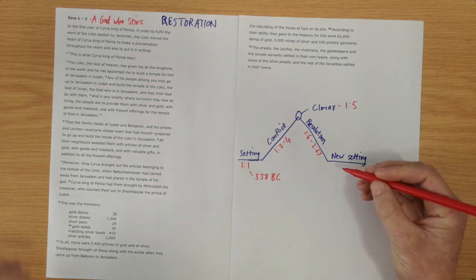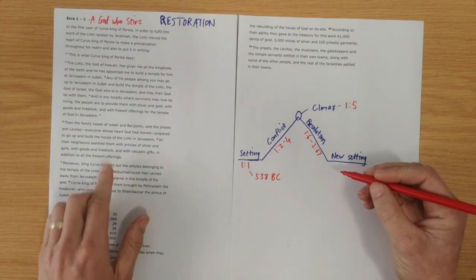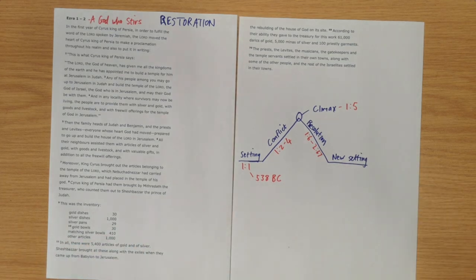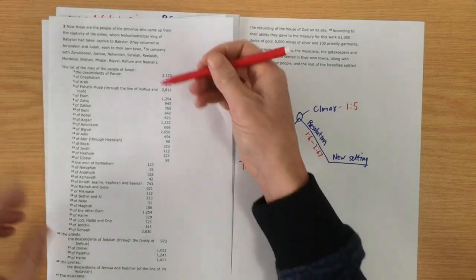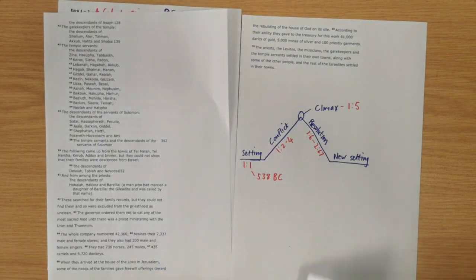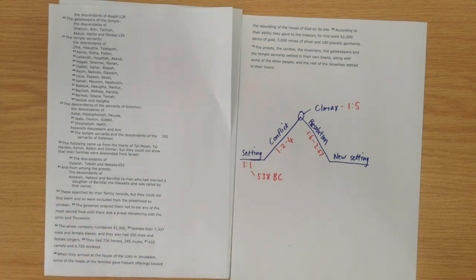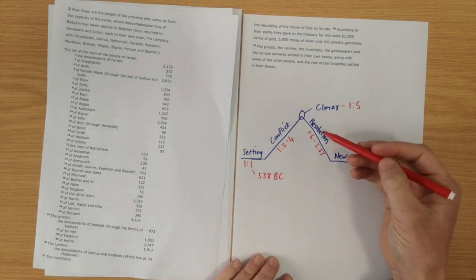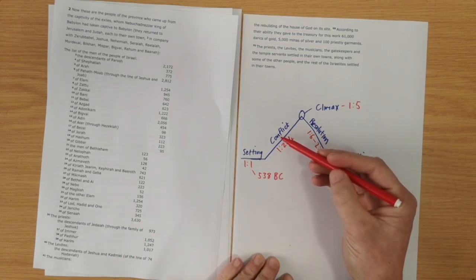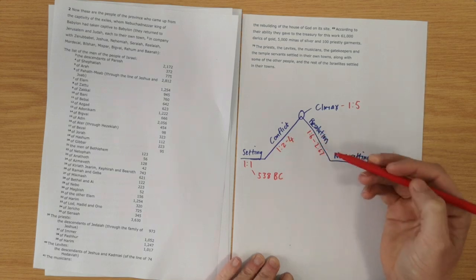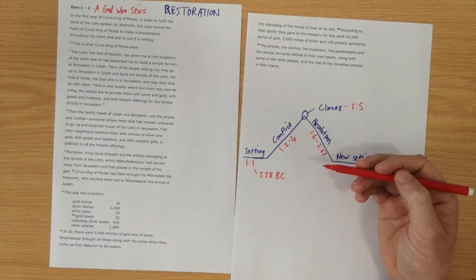Where we see in verse 6, their neighbors assist them with things to rebuild. The king himself sends back articles from the temple. And then we're given the inventory. And then from chapter 2, we are given this list of names. All the people who returned, all the priests and the Levites, the total number of the group who returned. So, that is kind of resolving. The climax has been, yes, the people are going to return. This shows that the conflict of the king saying, go and I'll give you what you need for the work, all of that being resolved in these verses.